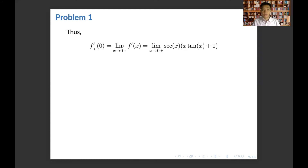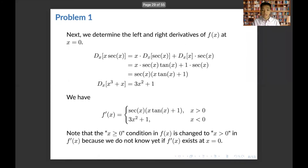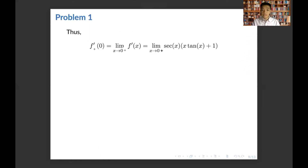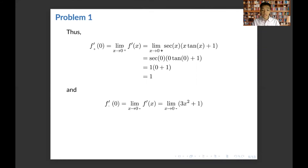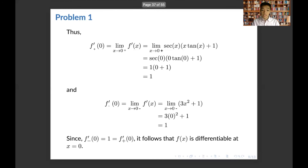We compute the right derivative: the limit of f prime of x as x approaches 0 from the right. The function on the right of 0 is secant x times the quantity x tangent x plus 1, which evaluates to 1 at x equals 0. The left derivative is the limit of f prime of x as x approaches 0 from the left, using 3x squared plus 1, which is continuous and evaluates to 1. Since both left and right derivatives equal 1, f is differentiable at x equals 0.